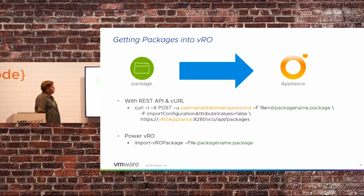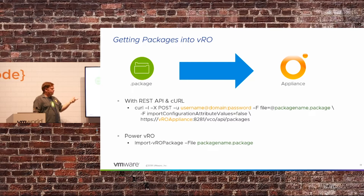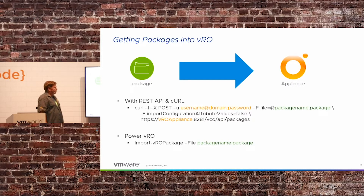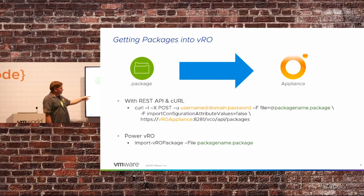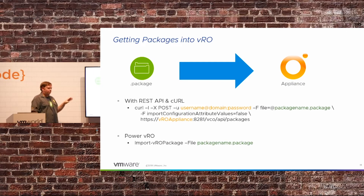So how do we get packages back into an appliance? There's a REST API available that you can use with curl or even PowerVRO if you happen to be using that. You take the package file and push it with a simple command. You also have an option over this API to handle your config elements — you can either ignore those values or overwrite them as you push the package.